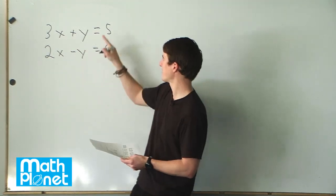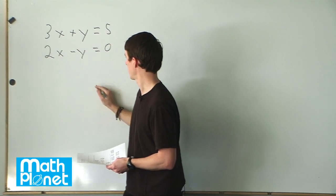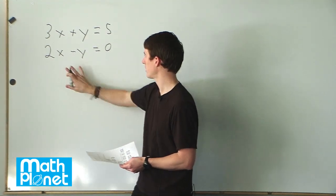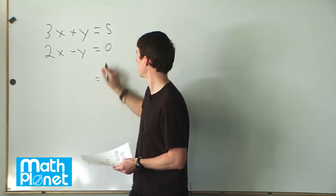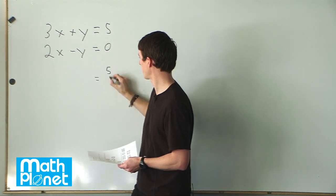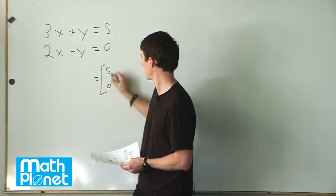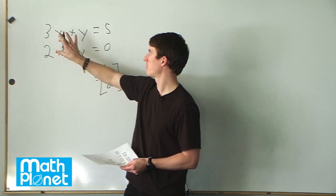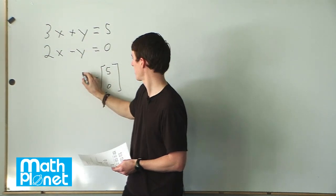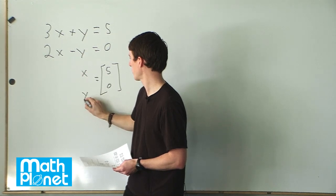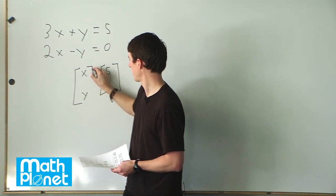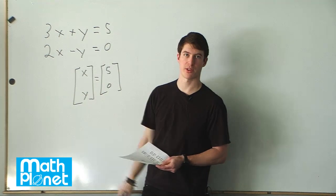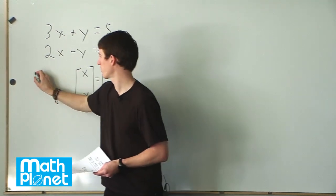The first thing we want to do is write this as a matrix equation. We have some multiplication here — a product of matrices — and that's going to equal the simple vector 5, 0. We want to write this as a product of some 2x2 matrix times the vector with x and y. These are our variables we're solving for, and we write the coefficients in the 2x2 matrix.